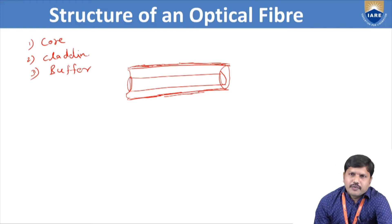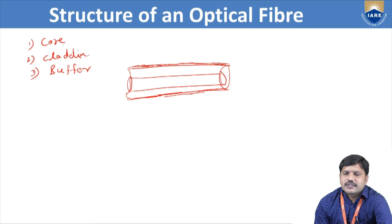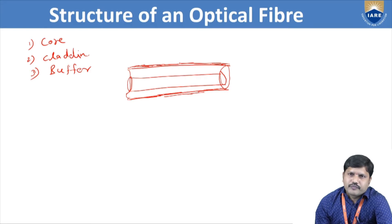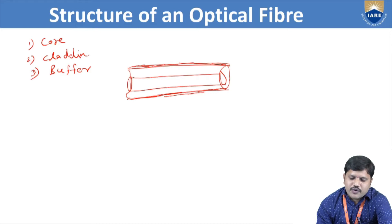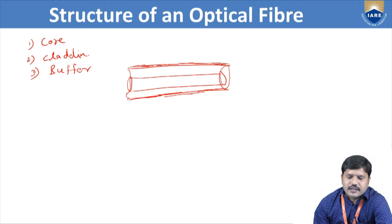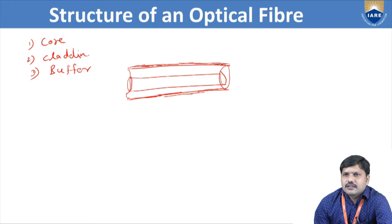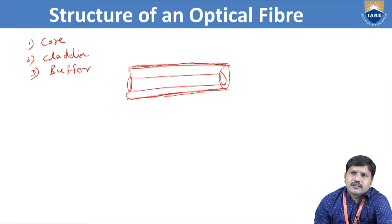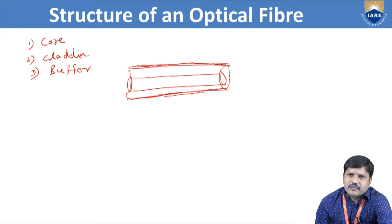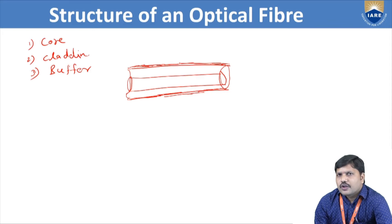The core is the inner cylindrical part of the optical fiber which is made up of glass or plastic. It is a major part because all the light or data passes through the core only. The core is surrounded by one more layer known as cladding, which is also made up of glass or plastic. The condition here is that the refractive index of the cladding is slightly lesser than that of the core material — meaning the refractive index of the core (n1) is higher than the refractive index of cladding (n2). The buffer jacket is the outer layer that protects the optical fiber from different atmospheric conditions.